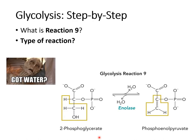Reaction 9 is enolase, and it is a dehydration reaction — water is pulled out of the molecule. This gives us phosphoenolpyruvate. Notice the word 'pyruvate' is in the product name, which means we are very close to our final product, coming up in reaction 10.